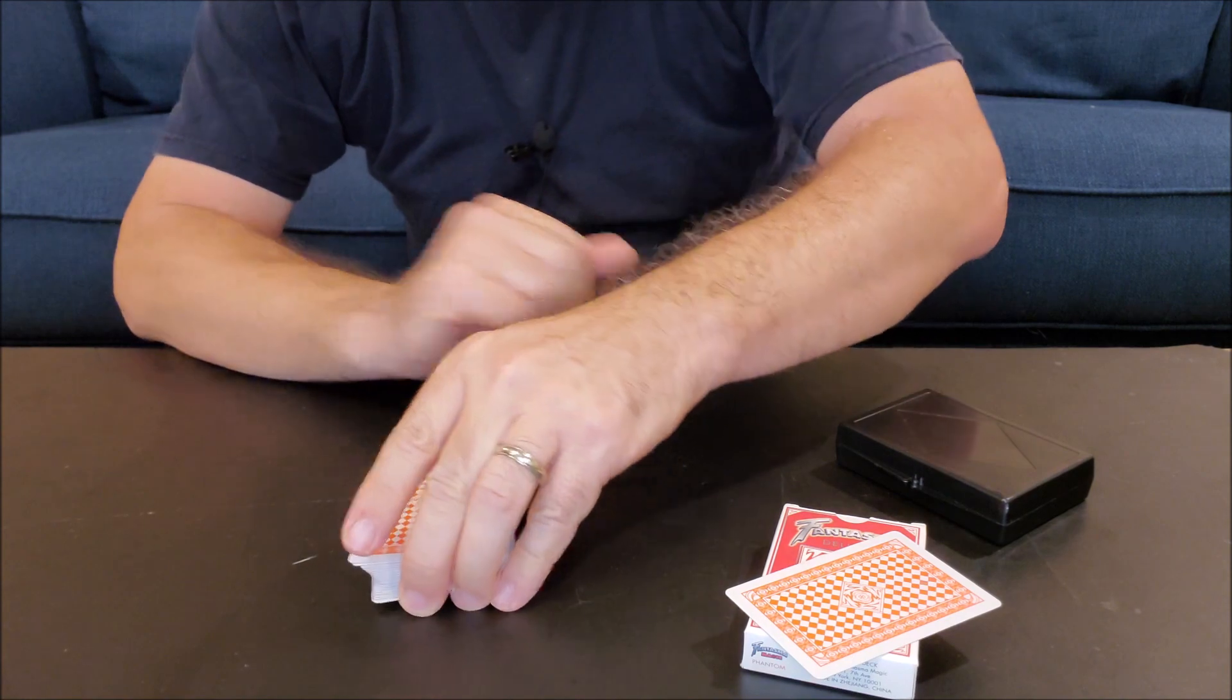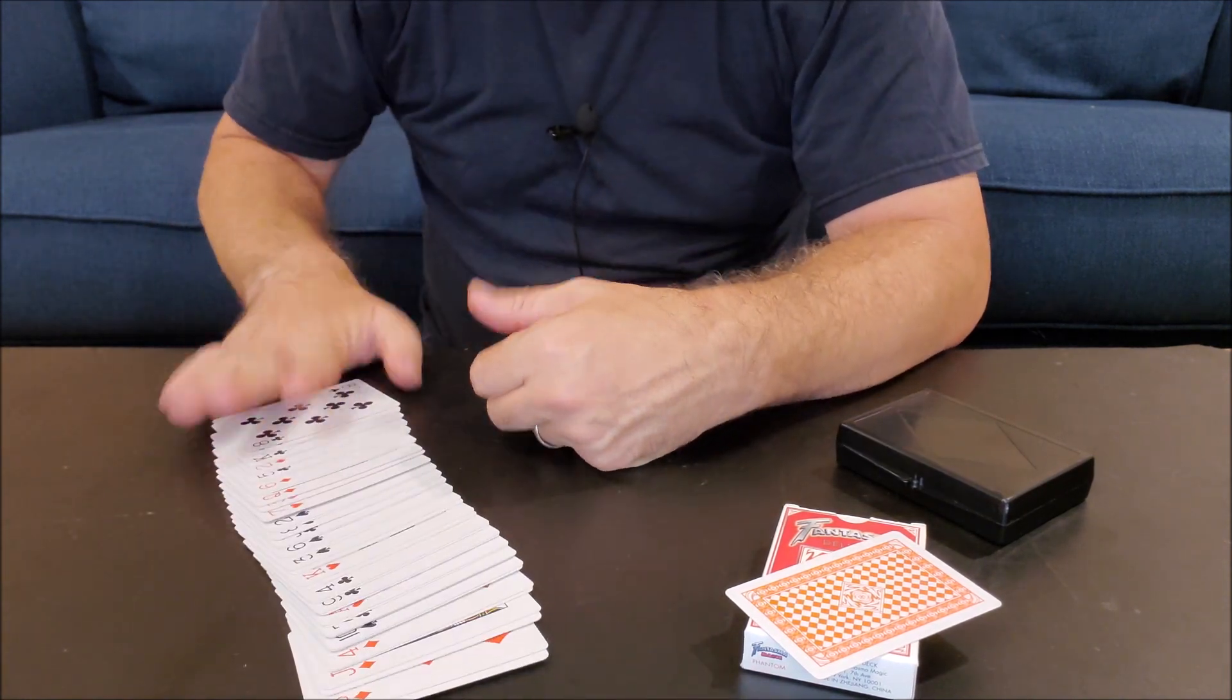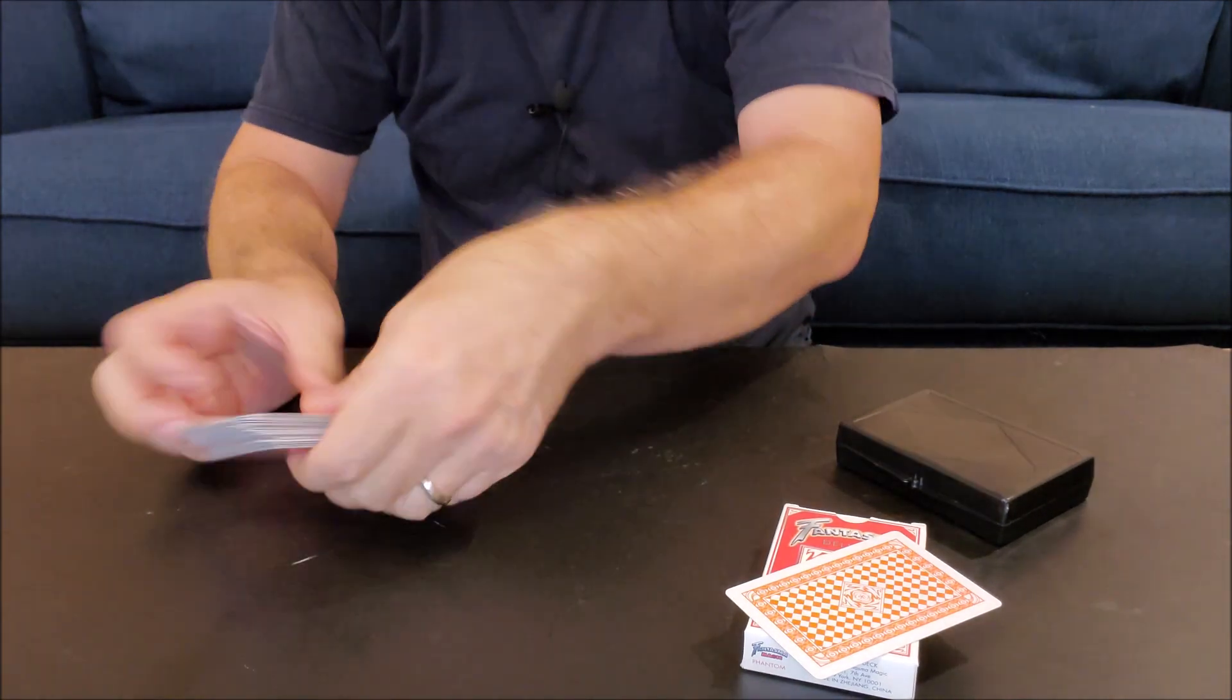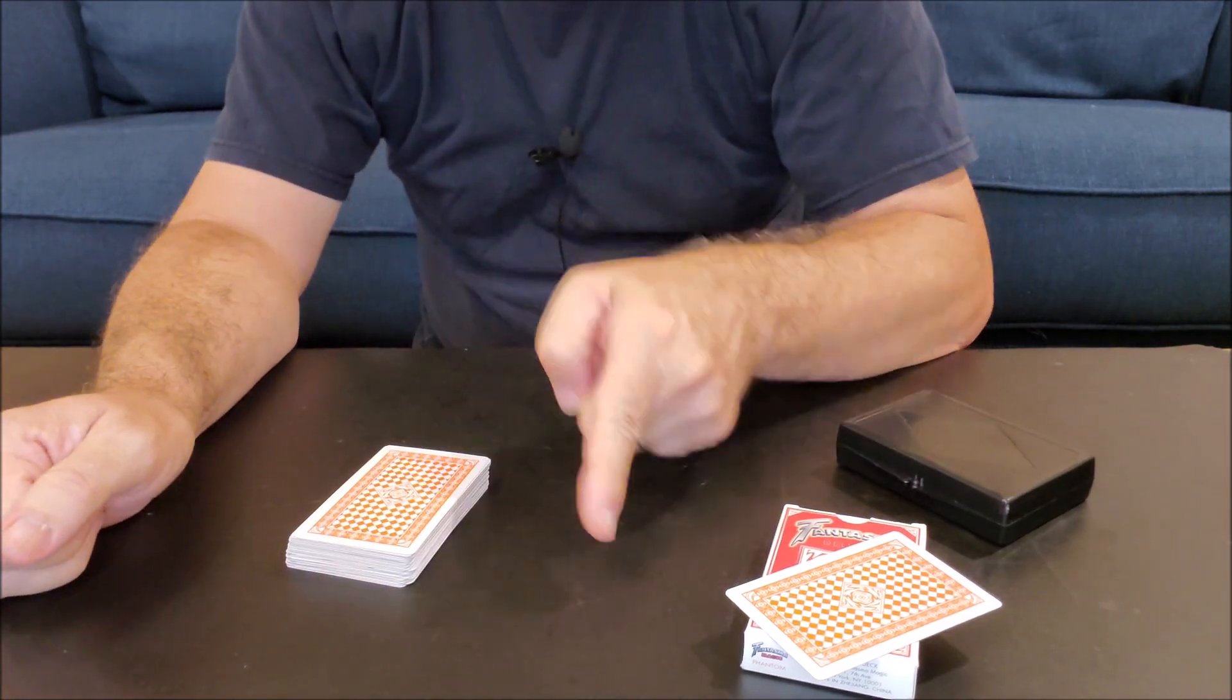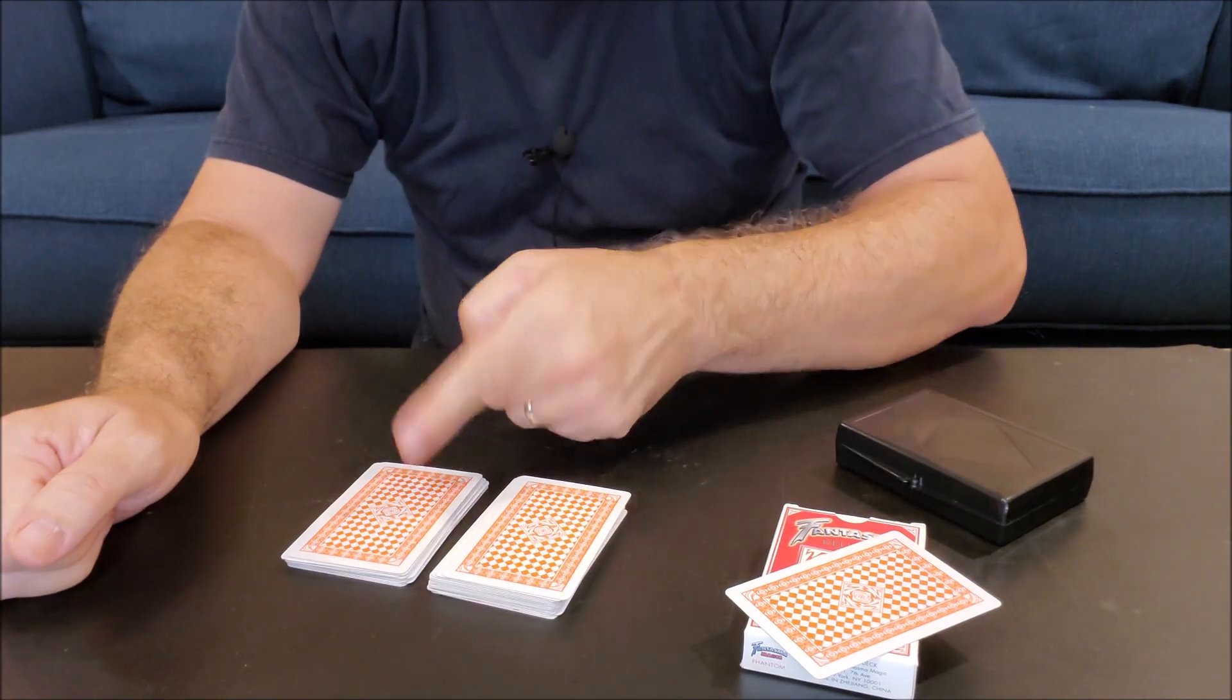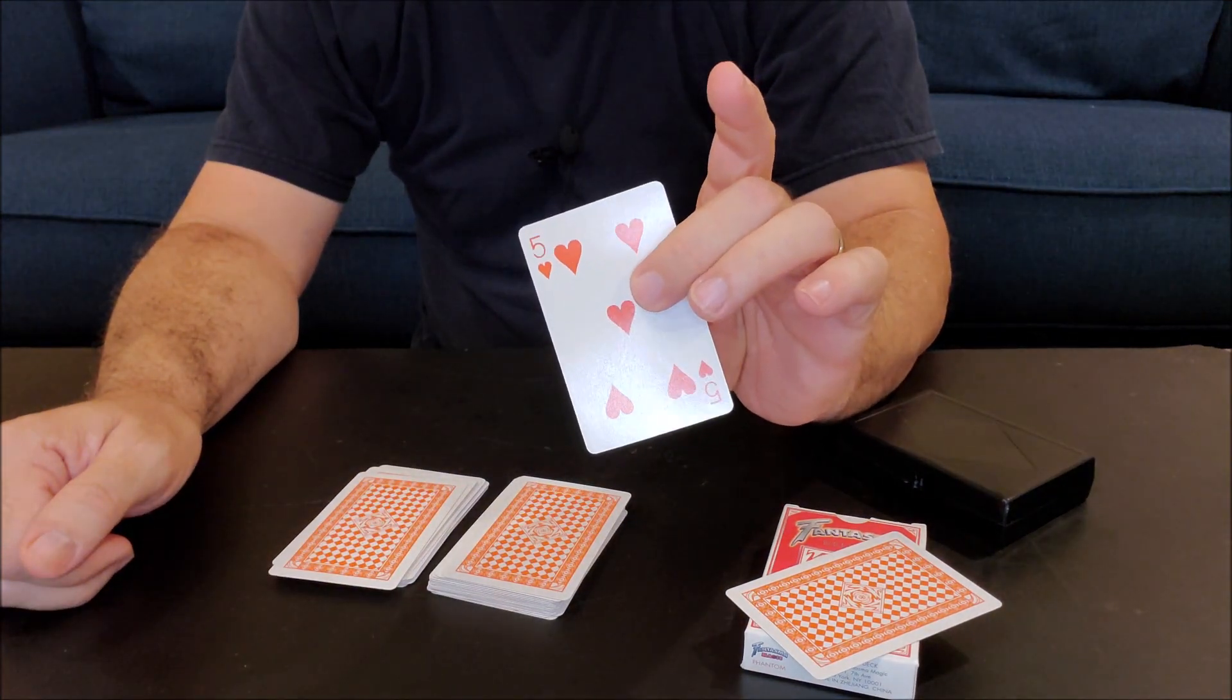So the first thing I'm going to do is I show you that every single card in my deck is different. They're all different and the deck is not in any particular order. Do me a favor and select a card. I'd just like you to cut the deck anywhere you'd like. They cut the deck and they look at their card and it is the five of hearts.